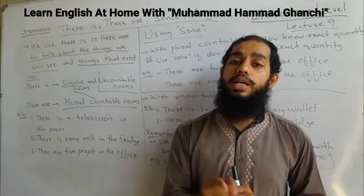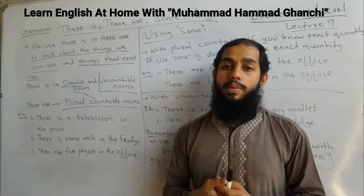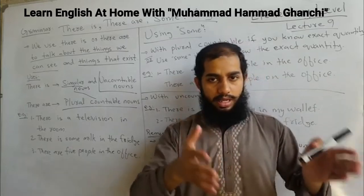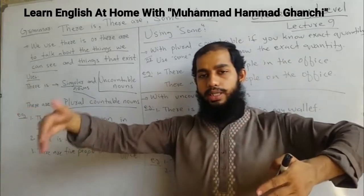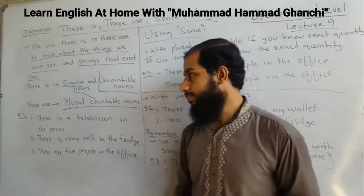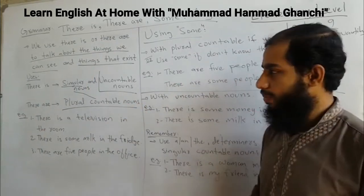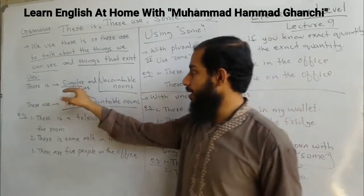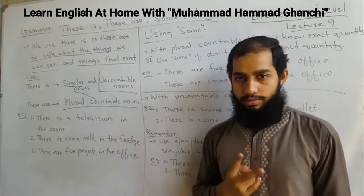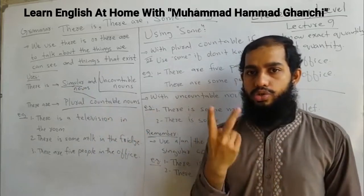We have already learned countable and uncountable nouns before, but to keep it simple: countable and uncountable. Let's have a quick example. Singular countable: 'a man,' 'two men,' 'a boy,' 'two boys.'